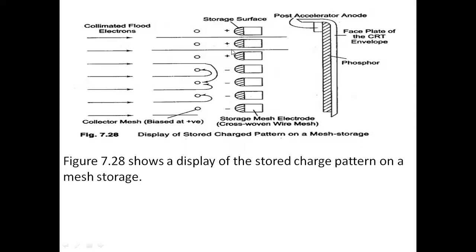First, the applied signal writes or creates charge carriers on the storage mesh. After that, we apply electrons through the flood gun — not from the writing gun. Due to this, the electrons are processed through the positive charge carriers and reach the CRT screen. Electrons that are not allowed to pass through the storage mesh are reflected and collected by the collector mesh.